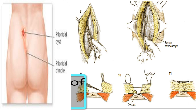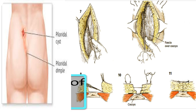The sutures should be placed at intervals of not more than one centimeter. Skin approximation must be very accurate, since even a small overlap may be surprisingly slow to heal in this area. A pressure dressing is applied with great care, and the sutures are allowed to remain in place.